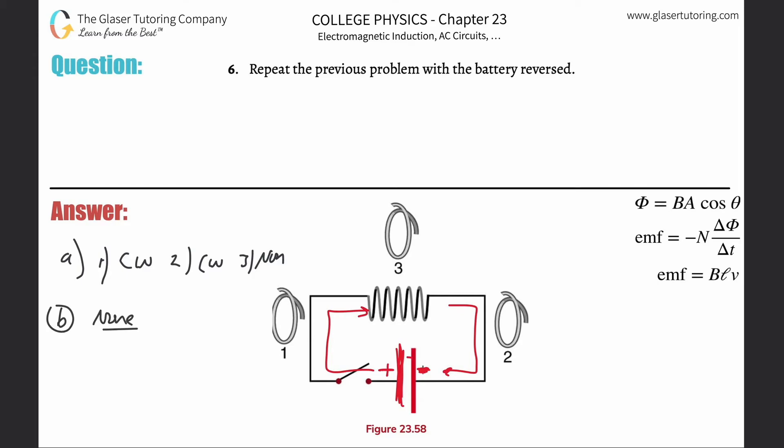And then c, it's the opposite now. One will be counterclockwise, two will be counterclockwise, and three is still none.